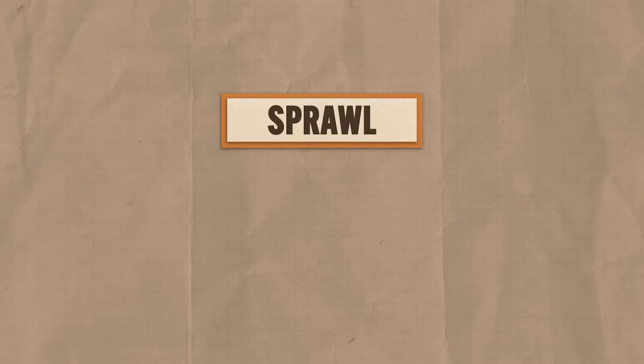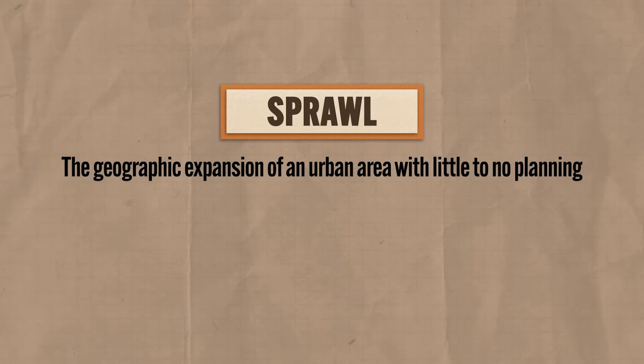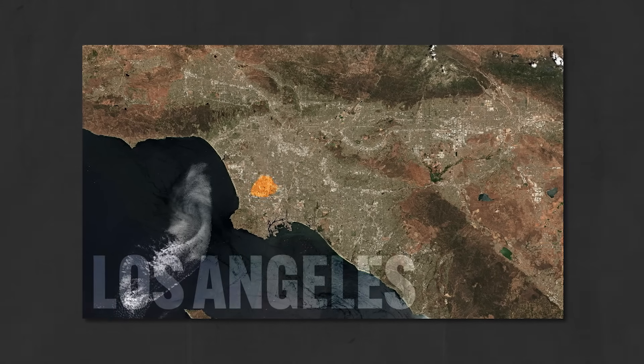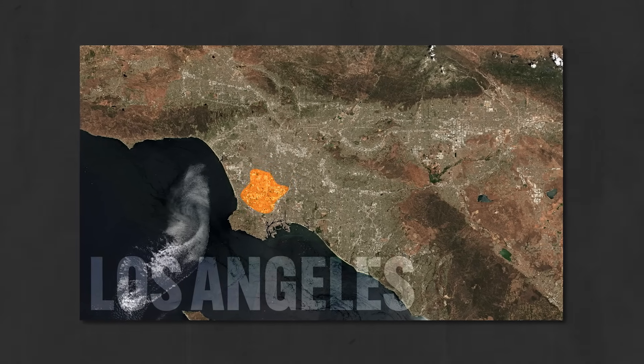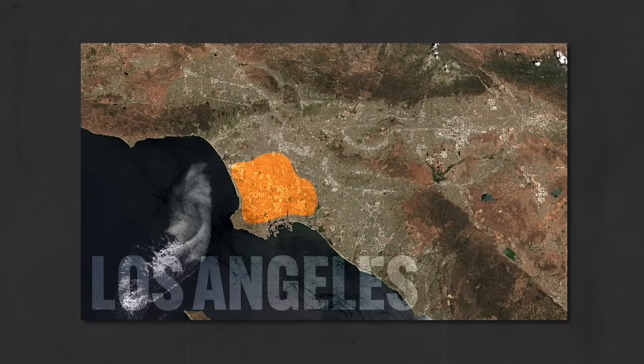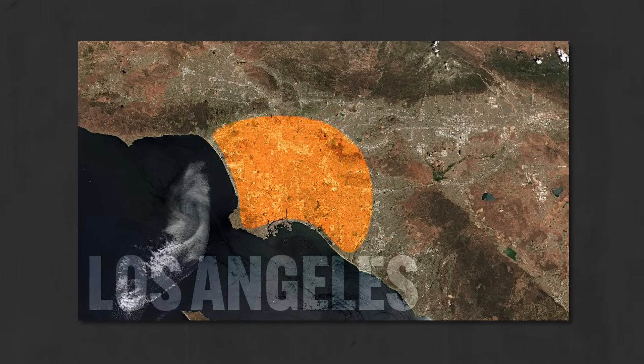Before I tell you what those new land use forms are, let's get cozy with those three terms. Sprawl refers to the geographic expansion of an urban area with little to no planning. So if a city experiences a high volume of migration in a short period of time, city planners and municipal authorities have to scramble to build infrastructure to support all those new people. And often that leads to building lots of residential housing and roads without much long-term planning. And so in that way, as urban populations grow, sprawl often accompanies it.